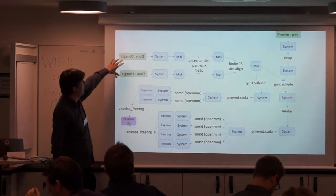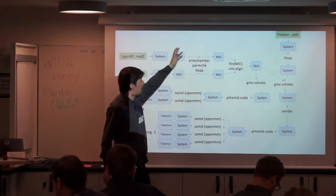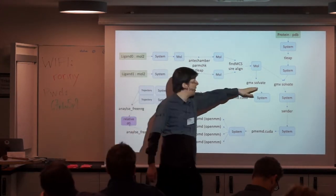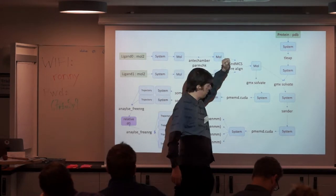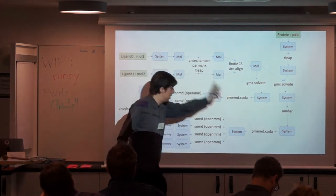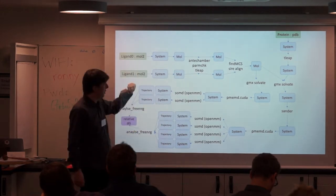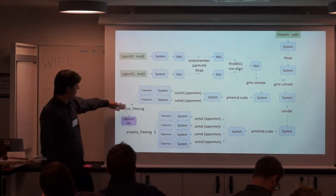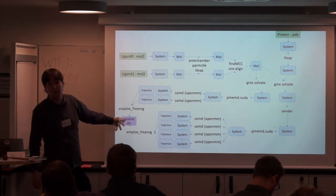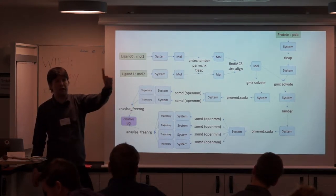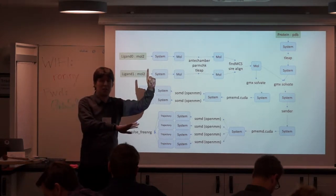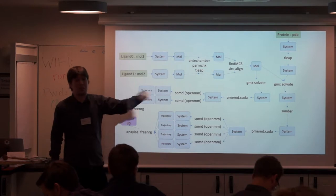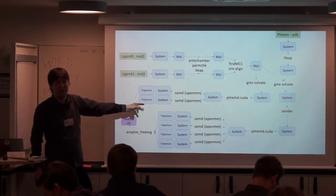You have to set up the ligands, which means basically throwing them through antechamber, parmchk, T-leap, aligning them together with findMCS, doing a GMX solvate for solvation, T-leap for the protein, sander for minimization, PMEMD-cuda for doing some equilibration, SOMD for doing the free energy calculations using OpenMM. Then inter-analyze free energy to pull the data out and get one relative delta G. And that's one free energy that you're getting. And we're actually going to do, well, we are doing this for about 50 relative binding free energies. So it's 50 times this.